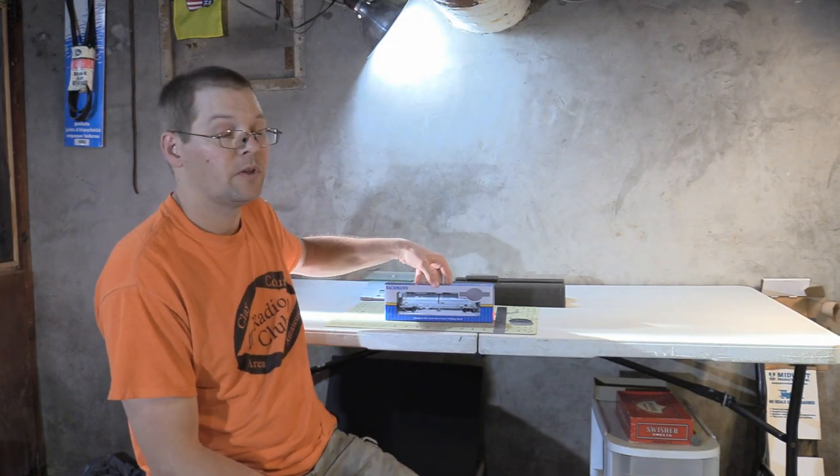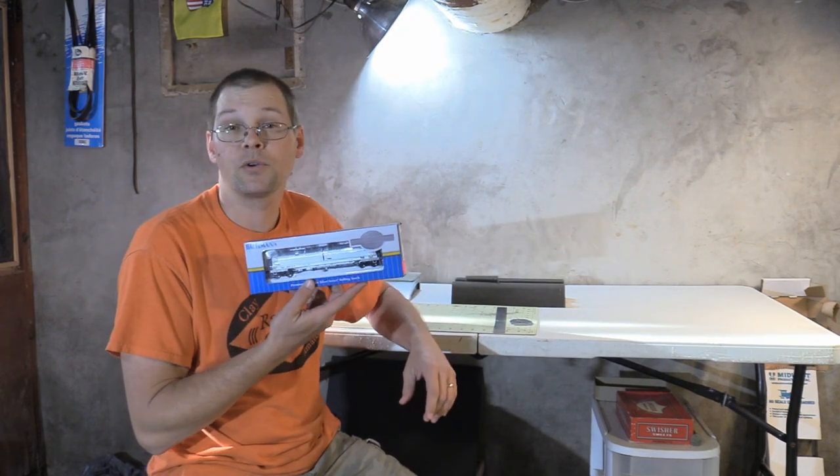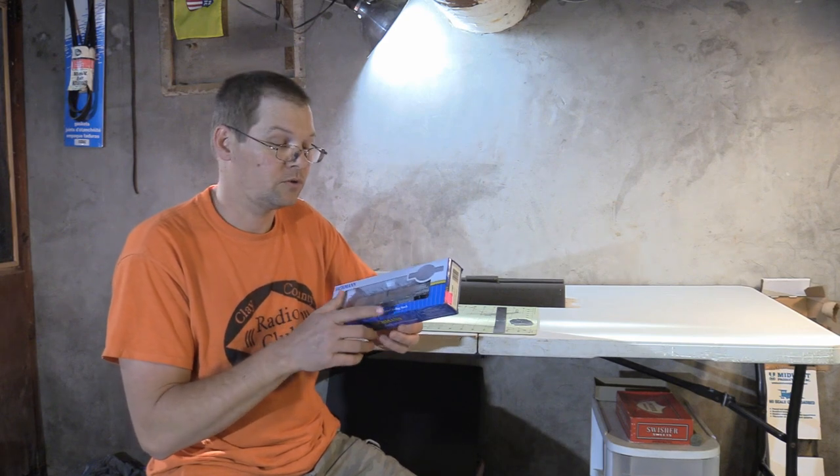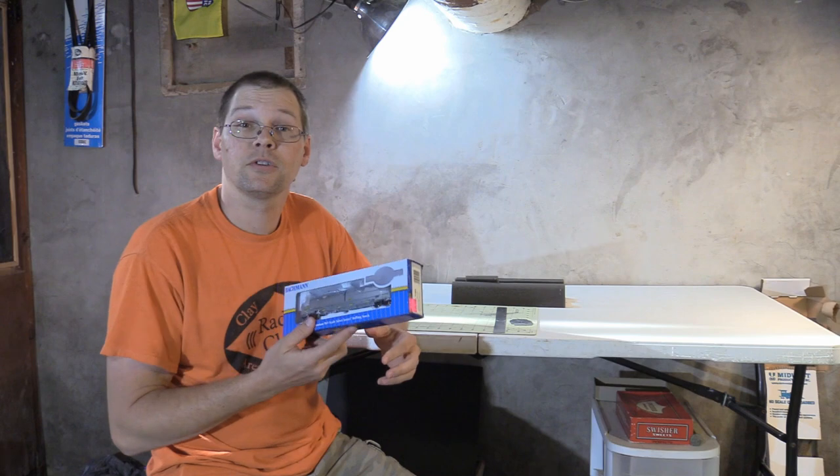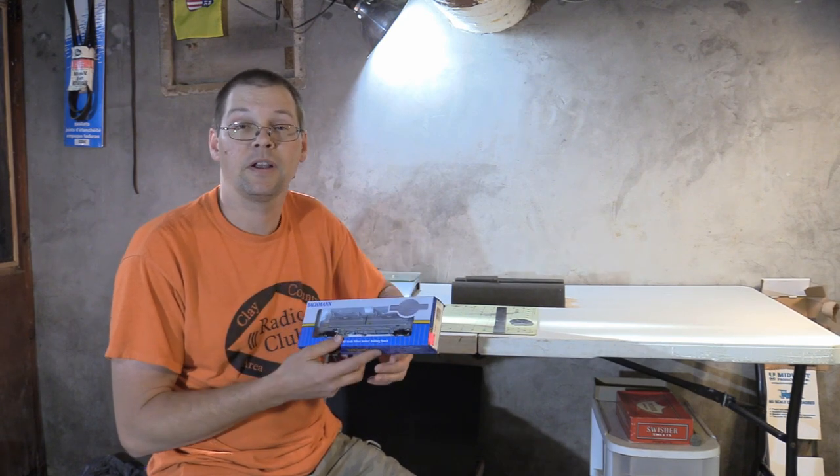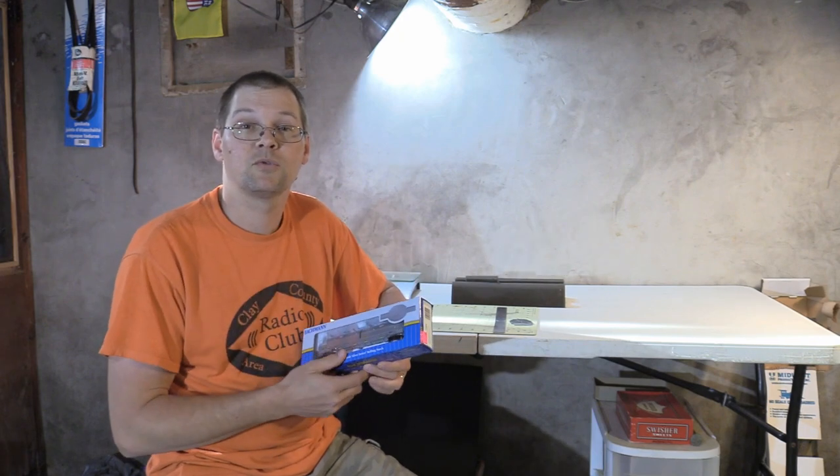Hi friends, today's video we're going to do a product review on this new Bachmann Silver Series 55-foot steel coil car. This car is brand new, just came in the mail a couple of days ago, so it's something that Bachmann just released. We're going to take an up-close look at it with the video camera and explain all of the different details that we're finding about this car. Before we get into that, be sure and subscribe to the channel.